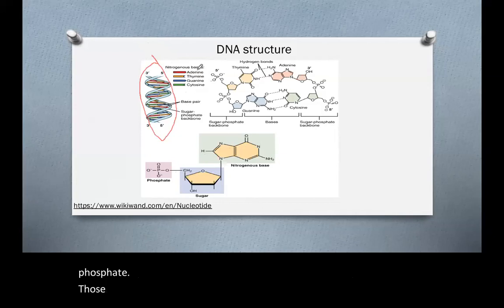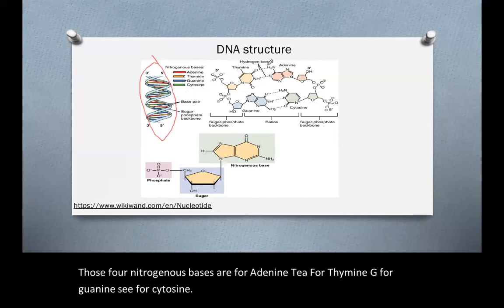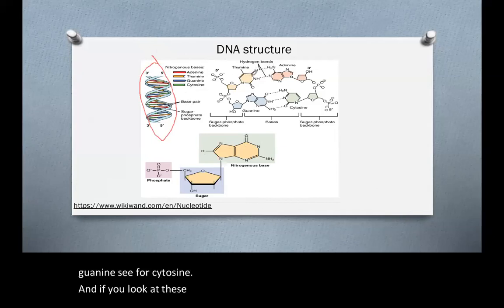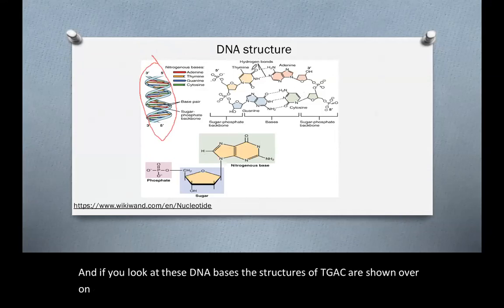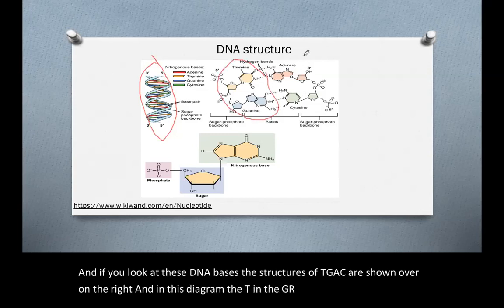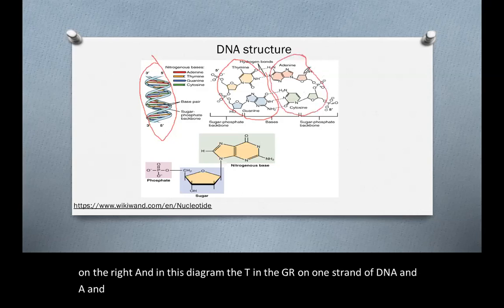Those four nitrogenous bases are A for adenine, T for thymine, G for guanine, C for cytosine. And if you look at these DNA bases, the structures of T, G, A, and C are shown over on the right. And in this diagram, the T and the G are on one strand of DNA, and the A and the C are on the second strand of DNA. And these individual strands come together to form this double helix by hydrogen bonding.